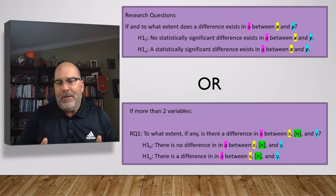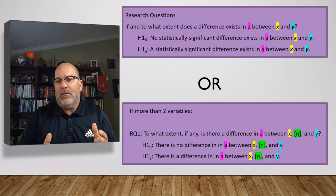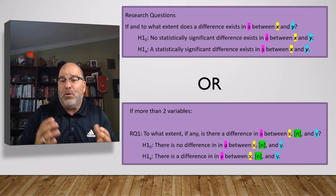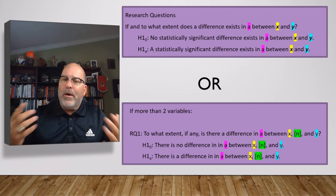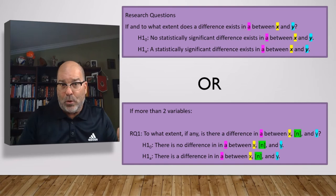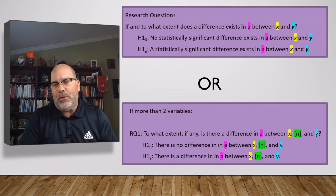Before getting into the research questions more specifically, I want to note that the formula changes if there are more than two groups. The basic two-group formula reads: if and to what extent does a difference exist in A between X and Y. But in our real-world example there were three generations — X, Y, and possibly Z — so be aware of that. It's always a good idea to look at real-world dissertations to help shape your own, and understanding this will help you understand why examples may not fit the formula exactly.